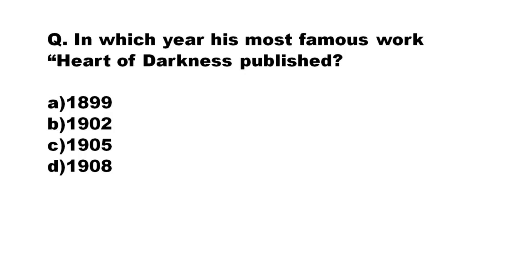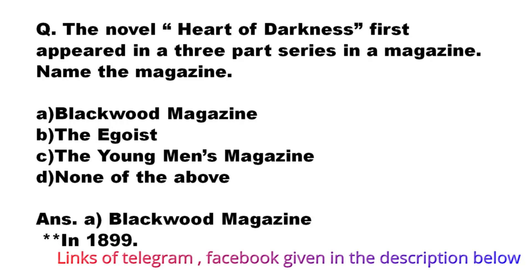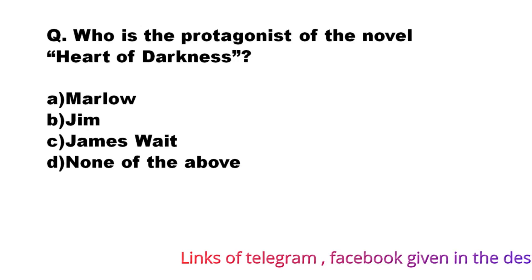Our next question: in which year was his most famous work, Heart of Darkness, published? The options are 1899, 1902, 1905, 1908. The correct answer is option B: 1902. Our next question: Heart of Darkness first appeared in a three-part series in a magazine — name the magazine. The options are: A) Blackwood's Magazine, B) The Egoist, C) The Young Man's Magazine, D) None of the above. The correct answer is option A: Blackwood's Magazine; it was published in the year 1899.